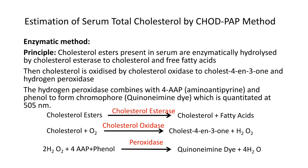Principle for the cholesterol oxidase-peroxidase method: cholesterol is present as esterified cholesterol esters in the serum, which are enzymatically hydrolyzed by cholesterol esterase to cholesterol and free fatty acids. Then this cholesterol is oxidized by cholesterol oxidase to cholesterol-4-EN-3-one and hydrogen peroxide. The hydrogen peroxide is combined with 4-aminoantipyrin and phenol to form the chromophore, which is a quinoneimine dye, measured at 505 nanometers.